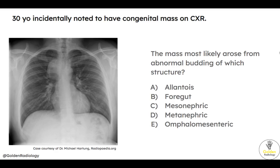First question: a 30-year-old is incidentally noted to have a congenital mass on chest x-ray. The question asks: the mass most likely arose from abnormal budding of which structure? The answer here is foregut. This is a bronchogenic cyst, which is a type of foregut duplication. We see a smooth, well-demarcated soft tissue mass arising from the trachea right here.